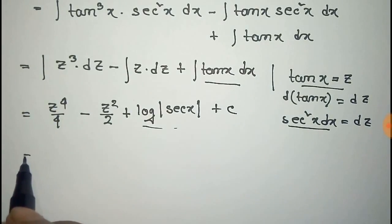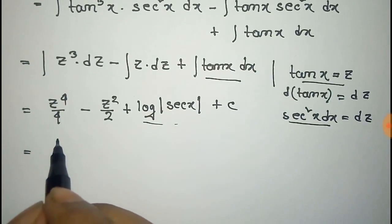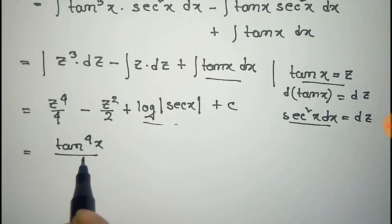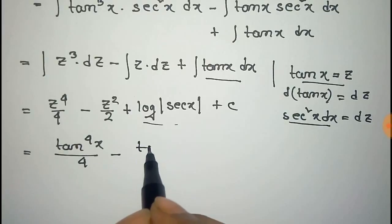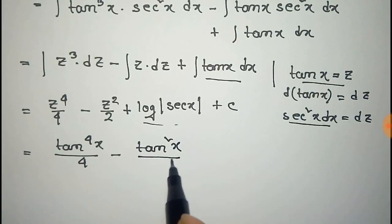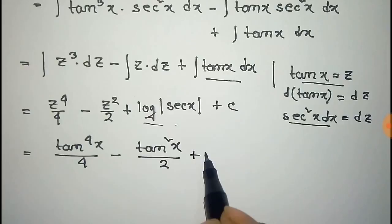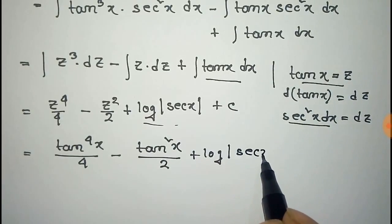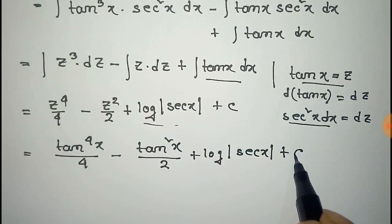So we have to put the value of z that is tan x. So tan to the power 4x by 4 minus tan square x by 2 plus log of mod of sec x, plus constant c.